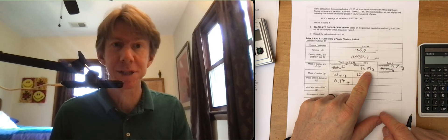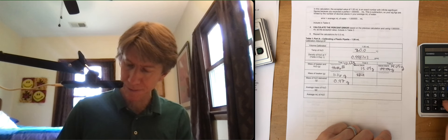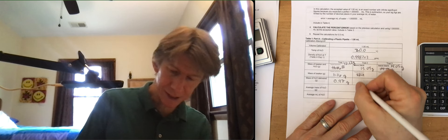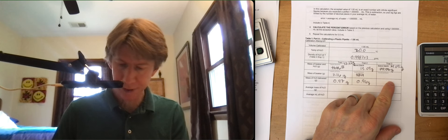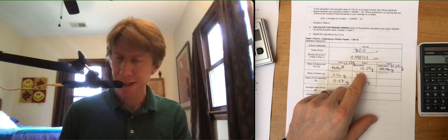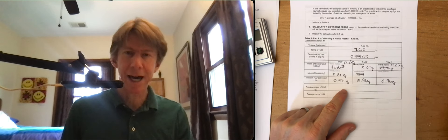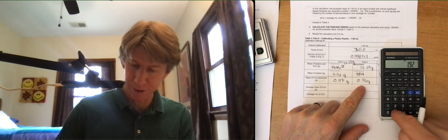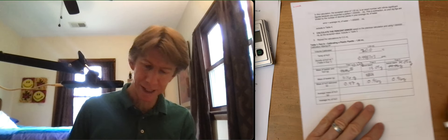Then this one, since I did not empty it, is going to be 13.09 minus 12.13. So I get 0.96 and 14.05 minus 14.09, I get 0.96. The average of these, 0.96 plus 0.96 plus 0.97, 2.89 divided by 3, 0.963.